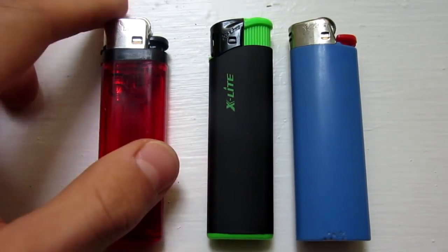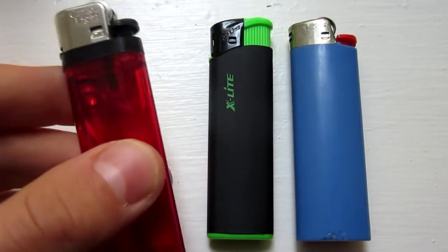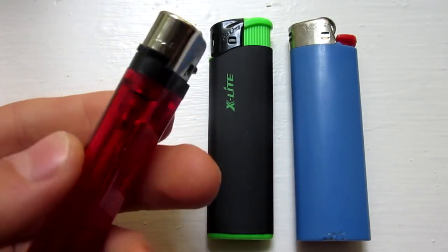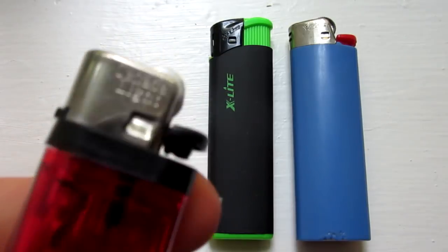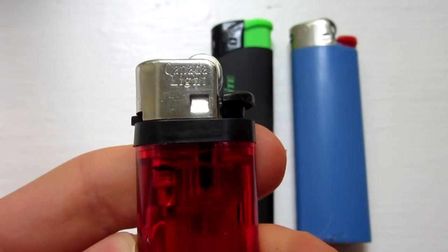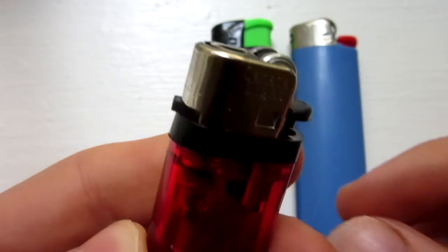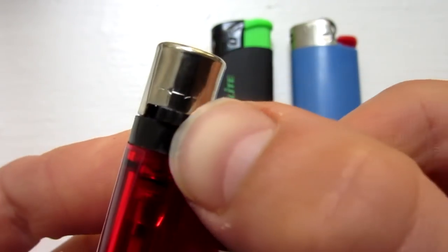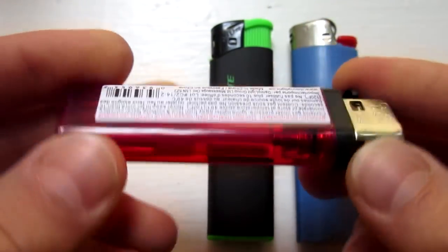The most important step is to get the right type of lighter, and so you need something just like this red one on the left. Generally these do not have name brands. Mine here says Canada Light, but it could be different for yours, and the key is that it has this adjustable knob right here. So that's the one that you will need.